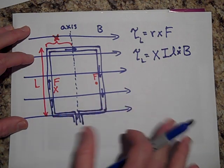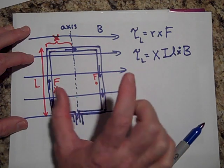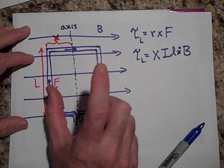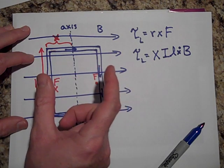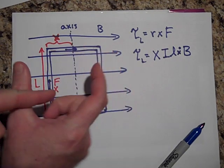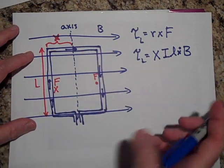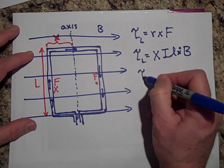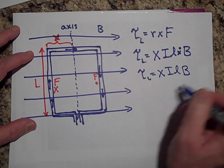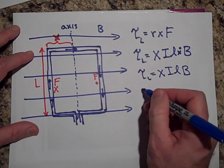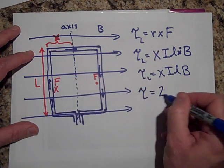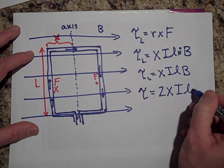When the loop rotates a bit, notice that the field is still perpendicular to L — even as it rotates, that perpendicularity is maintained. So we can drop the cross product and just write the torque on the left as x·I·L·B. The torque on the right is the same and adds to it, so the total torque is 2x·I·L·B.